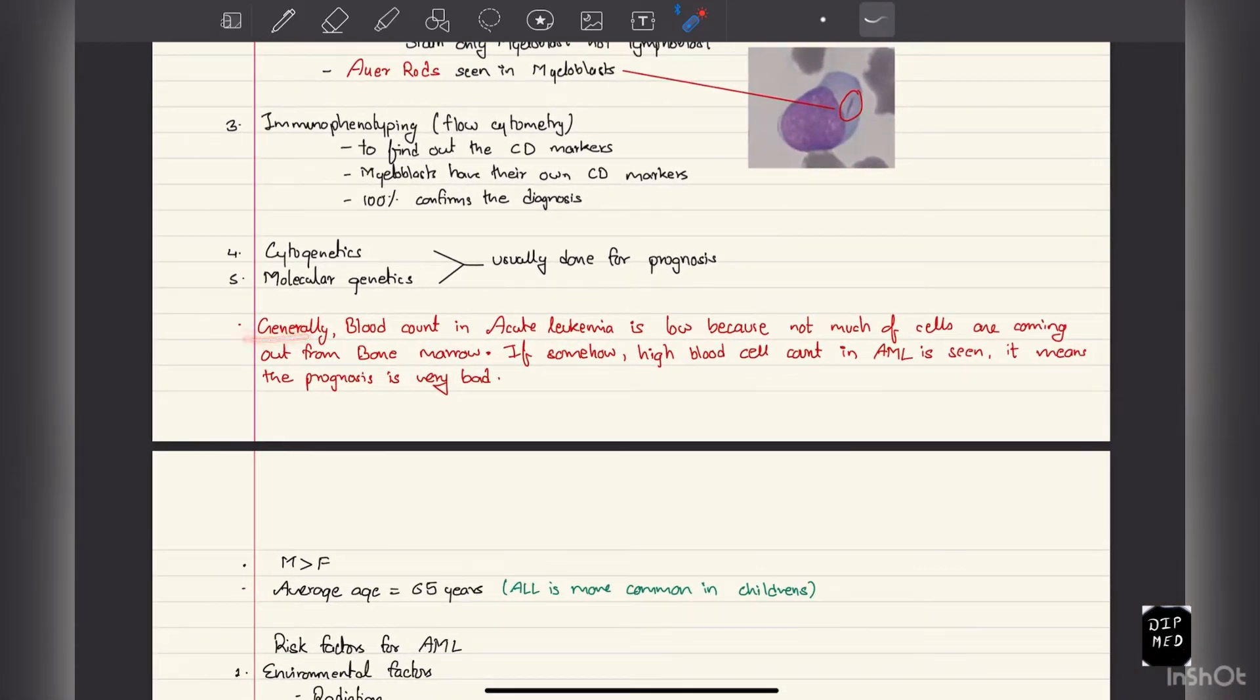Generally, blood count in acute leukemia is low because not much of these immature cells are coming out from the bone marrow. But if somehow high blood cell count in AML is seen, then it means bad prognosis.